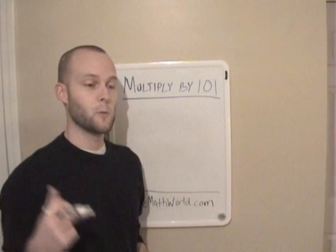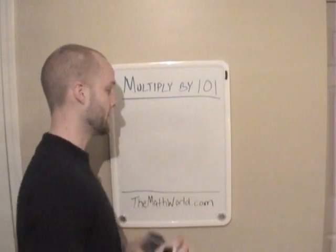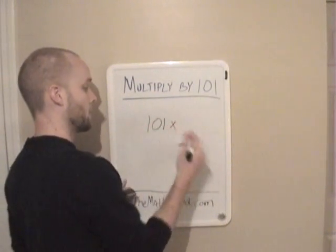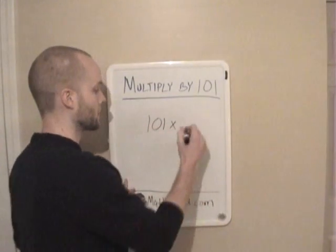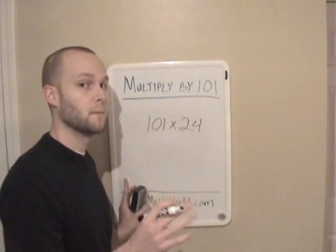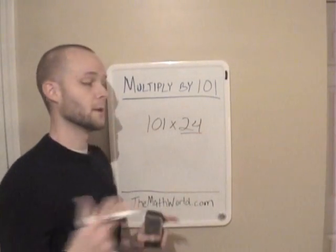And the first thing we're going to look at is when we multiply a two-digit number by 101. And here's what it looks like. The first example we're going to see is 101 times 24. And all you have to do any time you multiply 101 by a two-digit number, you only have to write down the two-digit number twice.